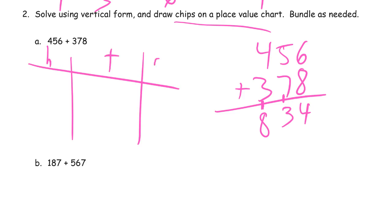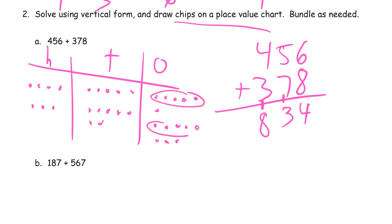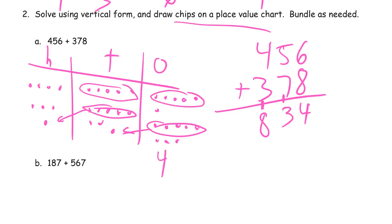Hundreds, tens, ones. Four hundred fifty-six plus three hundred seventy-eight. We've got two five-group rows here that will compose a ten. And five-group rows here and here that will compose a hundred. So what do we have left behind? Four ones, 1, 2, 3 tens, and 4, 5, 6, 7, 8 hundreds.